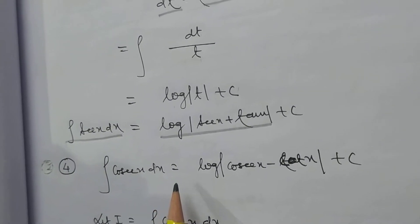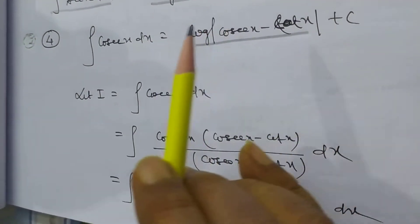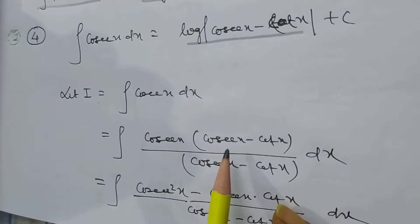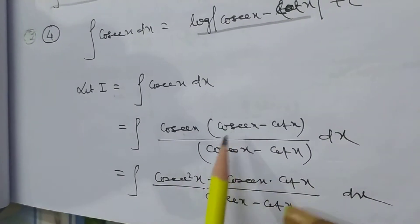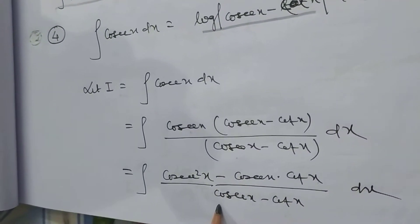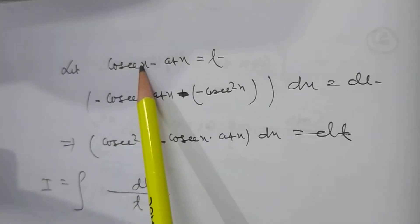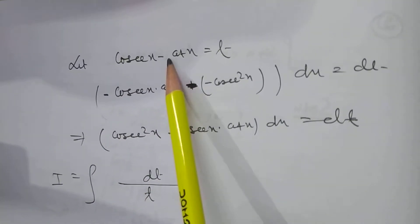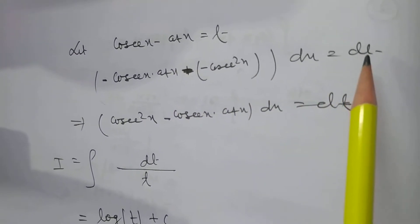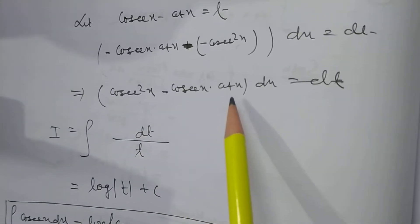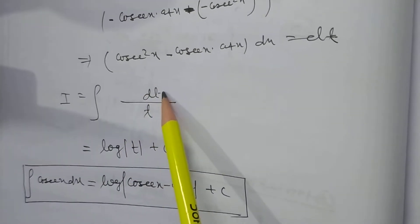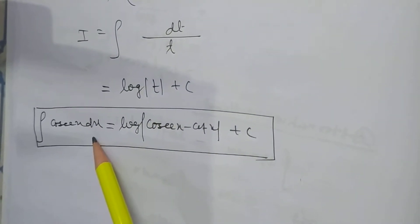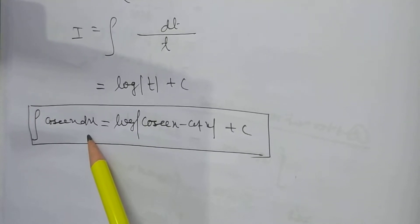The fourth integration is cosec x dx, which equals log|cosec x − cot x| + c. Let I = integral of cosec x dx. Multiplying numerator and denominator by the integrating factor (cosec x − cot x): we get (cosec²x − cosec x·cot x)/(cosec x − cot x) dx. Let t = cosec x − cot x, so dt = (−cosec x·cot x + cosec²x) dx. The integral becomes dt/t = log|t| + c, so integration of cosec x equals log|cosec x − cot x| + c.